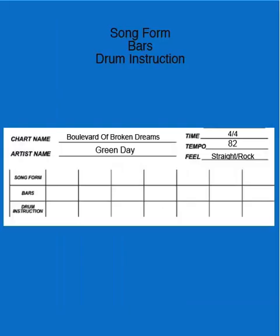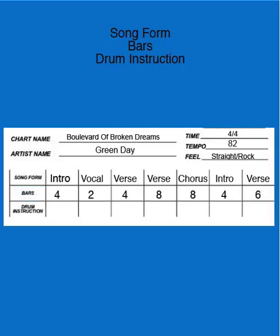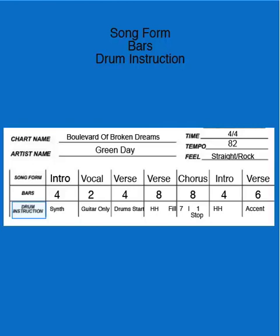The top level is the song form description, such as intro, verse, or chorus. The second level is the number of bars or measures of time in that song form — for example, the intro is four bars, the vocal is two, the verse is four bars. The third level is special playing instructions, so you will be aware of stops, fills, accents, or any other details in the song that you need to know to play the song just like the recording.